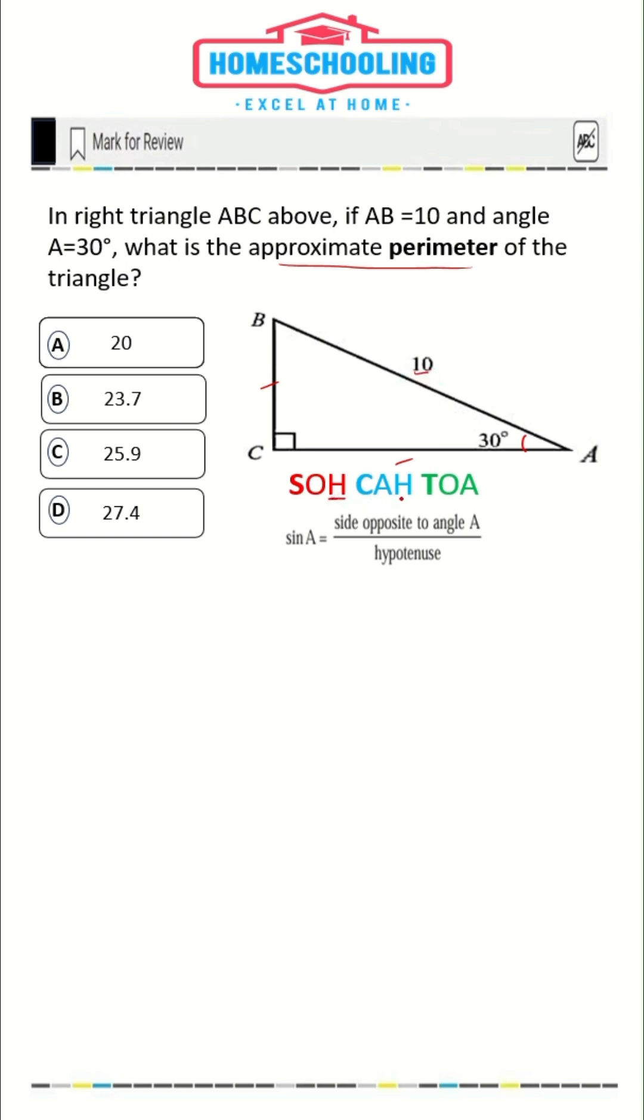Either we can use SOH or CAH. We are using the SOH formula for sine theta. It means sine theta is equal to opposite divided by hypotenuse.